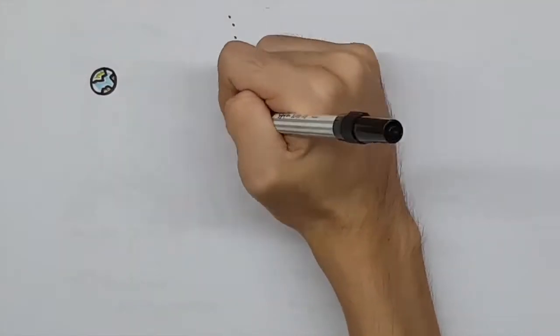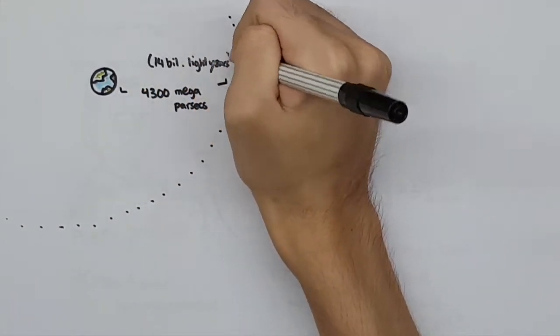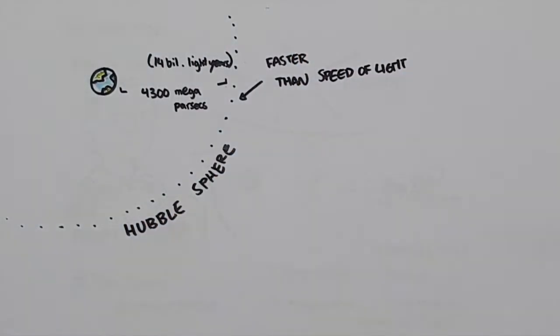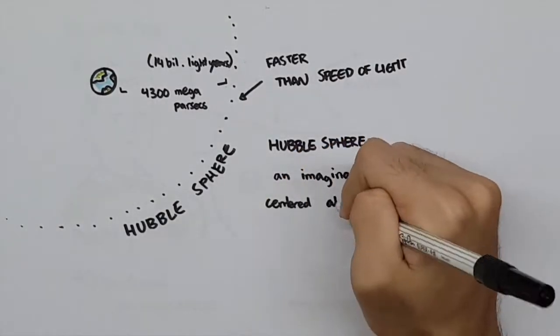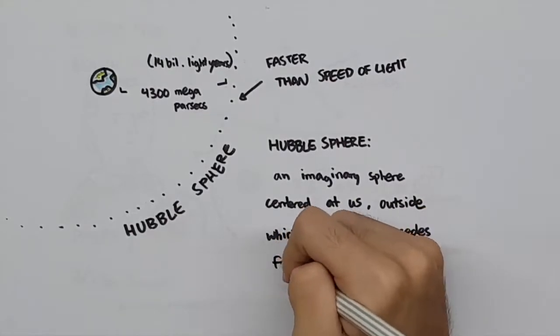The distance at which stars and galaxies would be receding faster than the speed of light is 4,300 megaparsecs, or 14 billion light-years, and this boundary is where the Hubble sphere is. The Hubble sphere is an imaginary sphere centered at us, outside of which everything recedes faster than the speed of light.